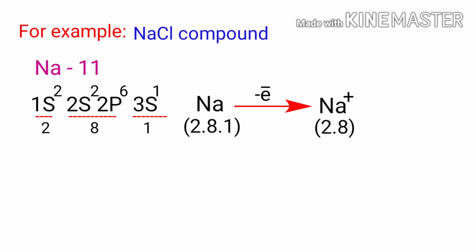If sodium loses an electron, it now has 11 protons, 11 neutrons and only 10 electrons, leaving it with an overall charge of plus 1. It is now referred to as a sodium ion.